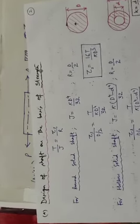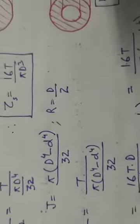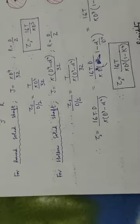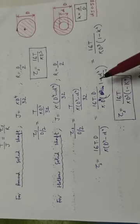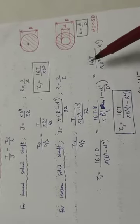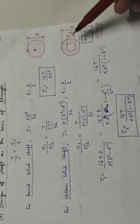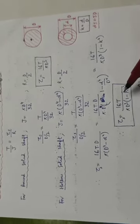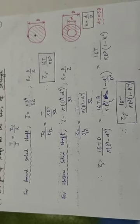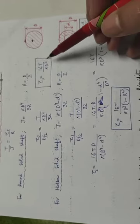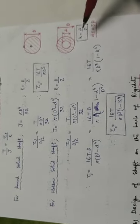For a hollow shaft, J = π(D⁴ − d⁴)/32 and R = D/2, where small d is the inner diameter and capital D is the outer diameter. Substituting these values and rearranging, the shear stress equals 16T upon πD³(1 − K⁴), where K is the ratio of inner diameter to outer diameter. If the inner diameter is not given, it is taken as 0.5D.